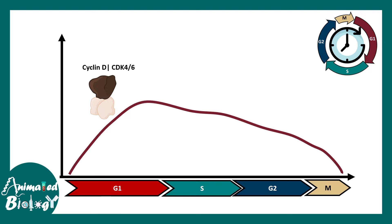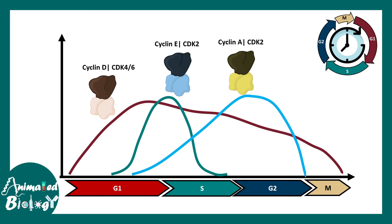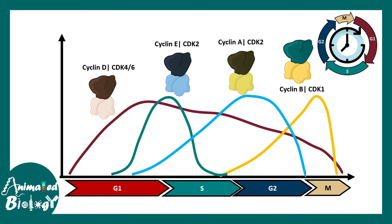Let's look at the cyclin-CDK complexes active in different stages of the cell cycle. In G1 phase, the most active complex is cyclin D with CDK4/6. In S phase, cyclin E and CDK2 are active. At the end of S phase, cyclin A and CDK2 are active. In M phase, the key complex is cyclin B with CDK1. The most important cyclins are cyclin D, cyclin E, and cyclin B.